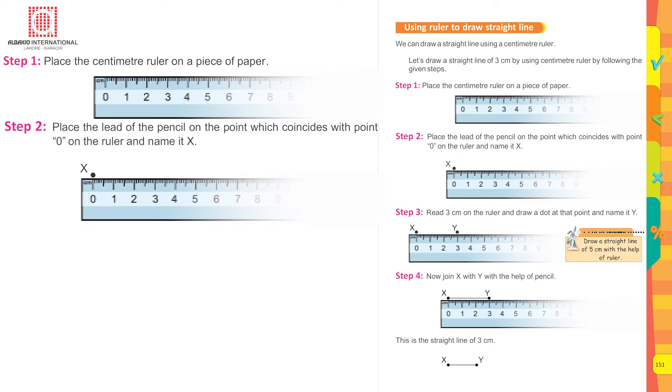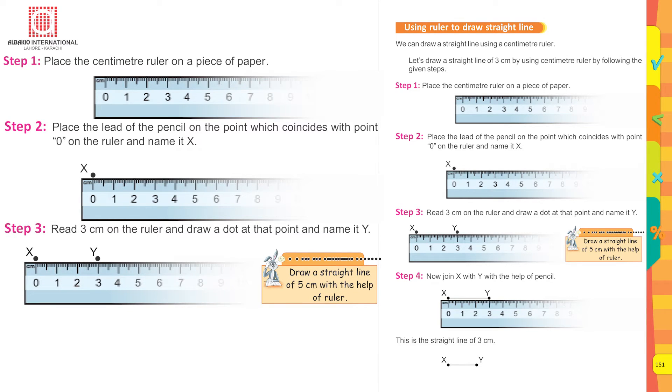Place the lead of the pencil on the point which coincides with point 0 on the ruler and name it X. Step 3: Read 3 centimeters on the ruler and draw a dot at that point and name it Y.